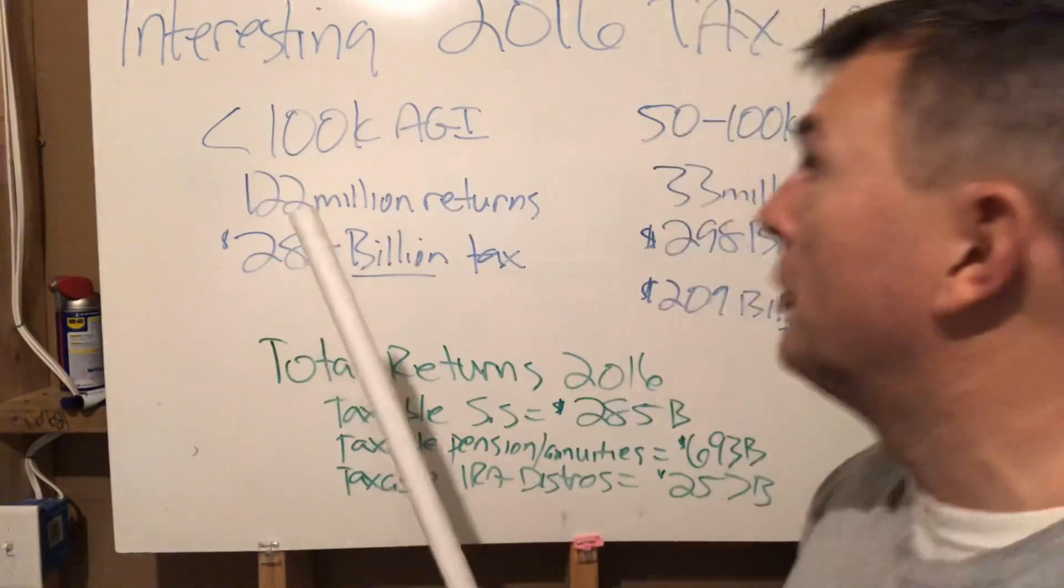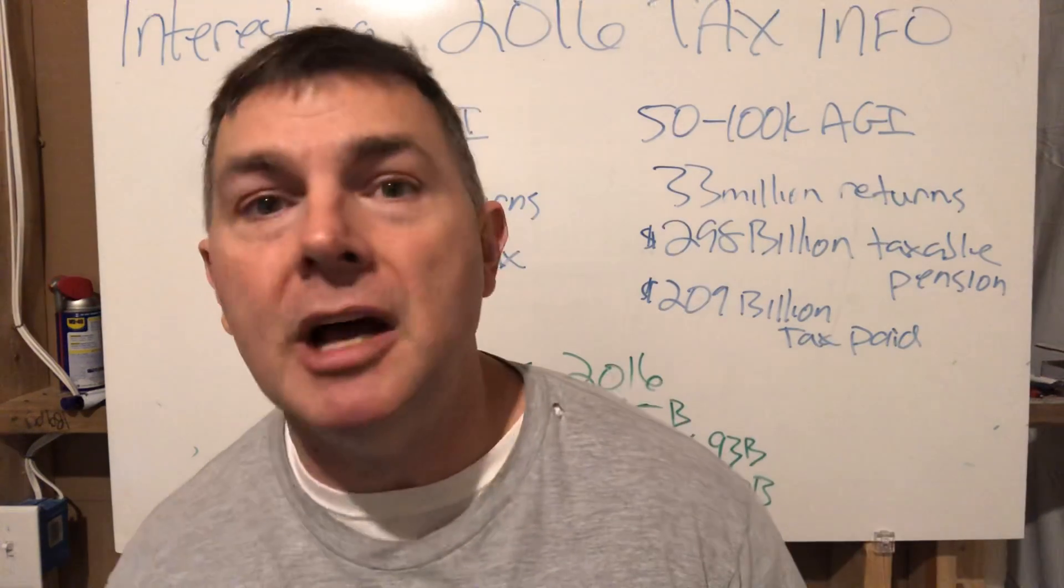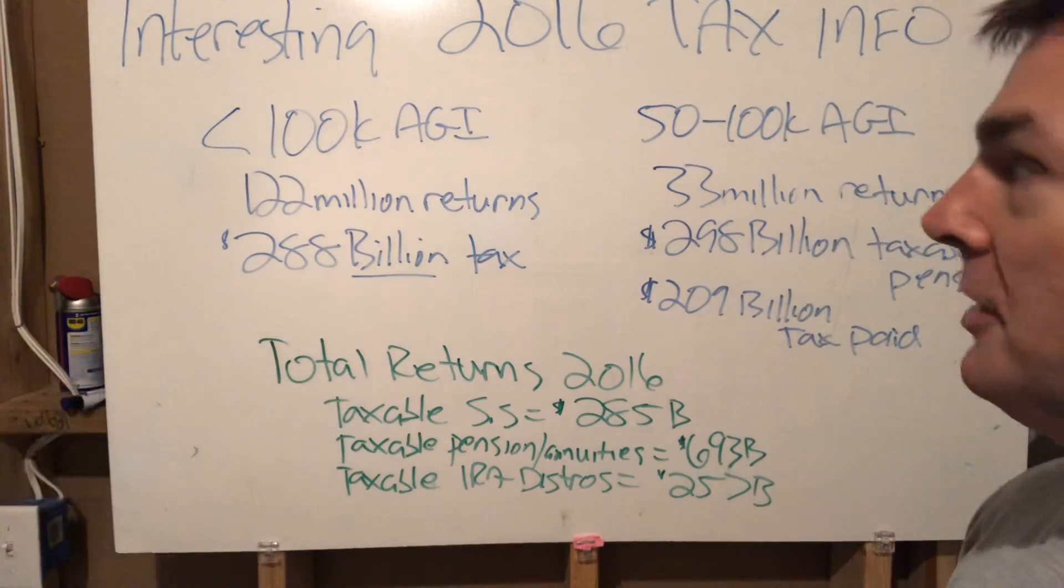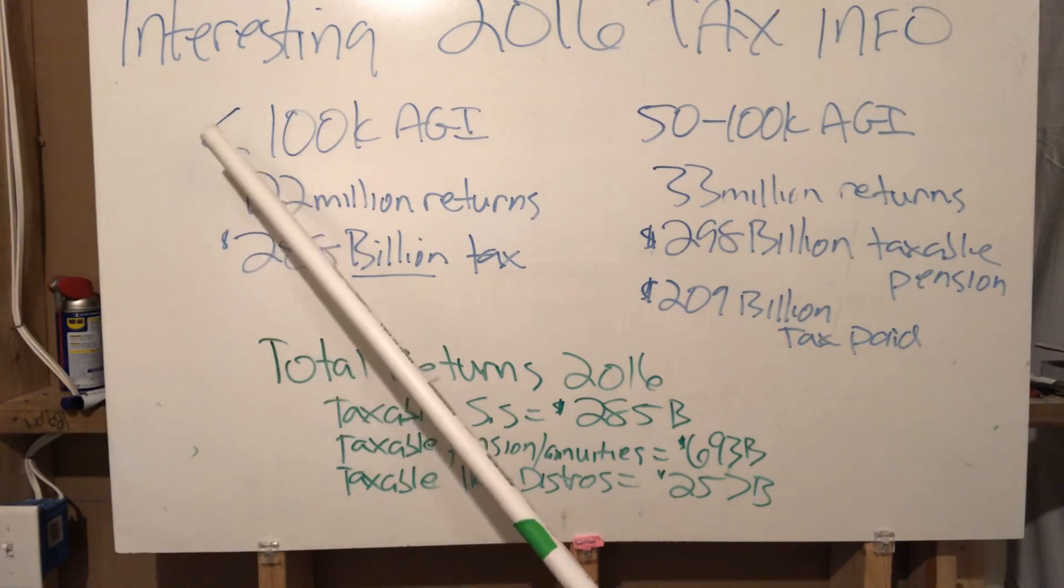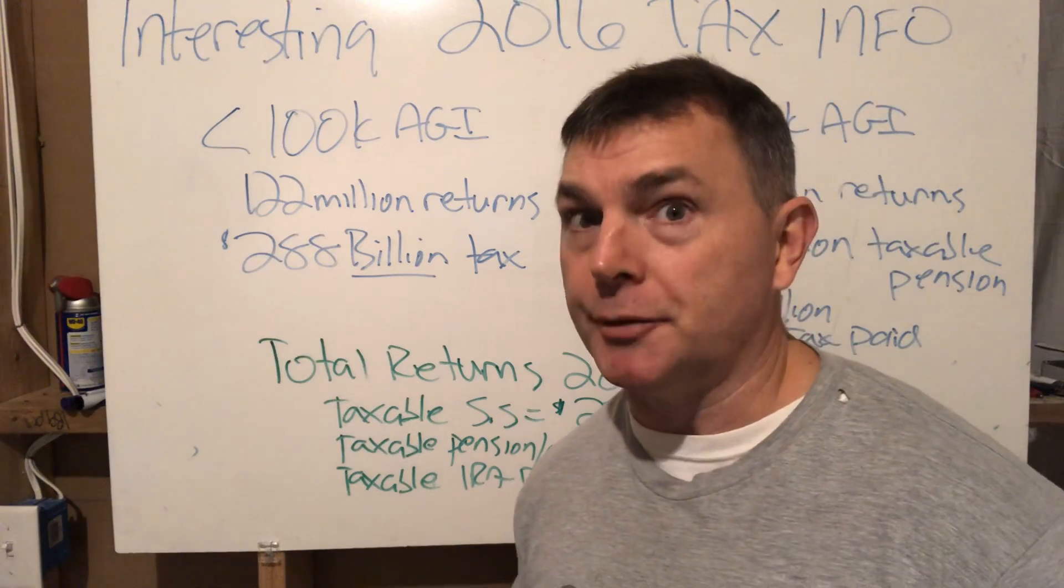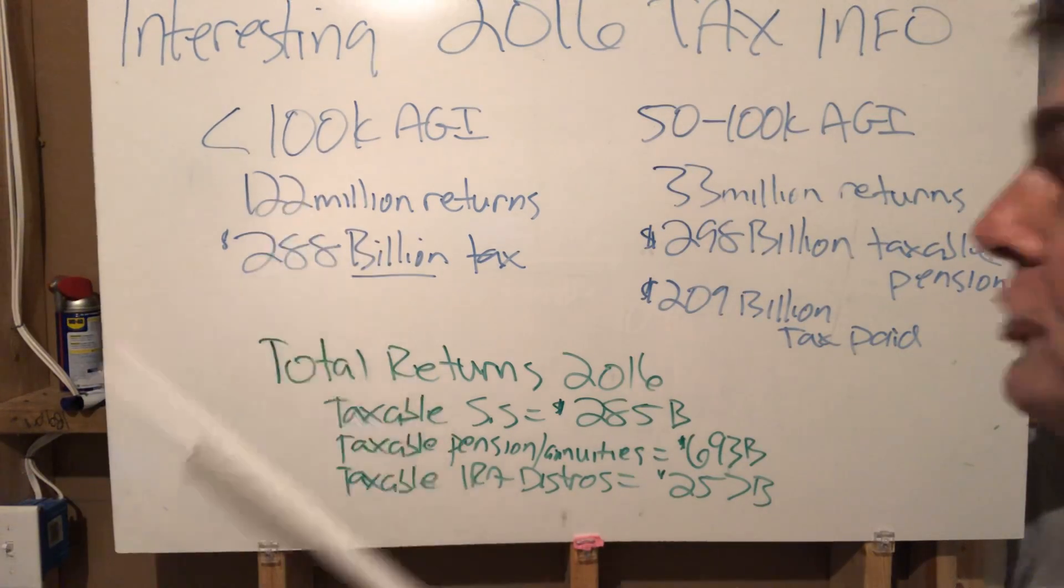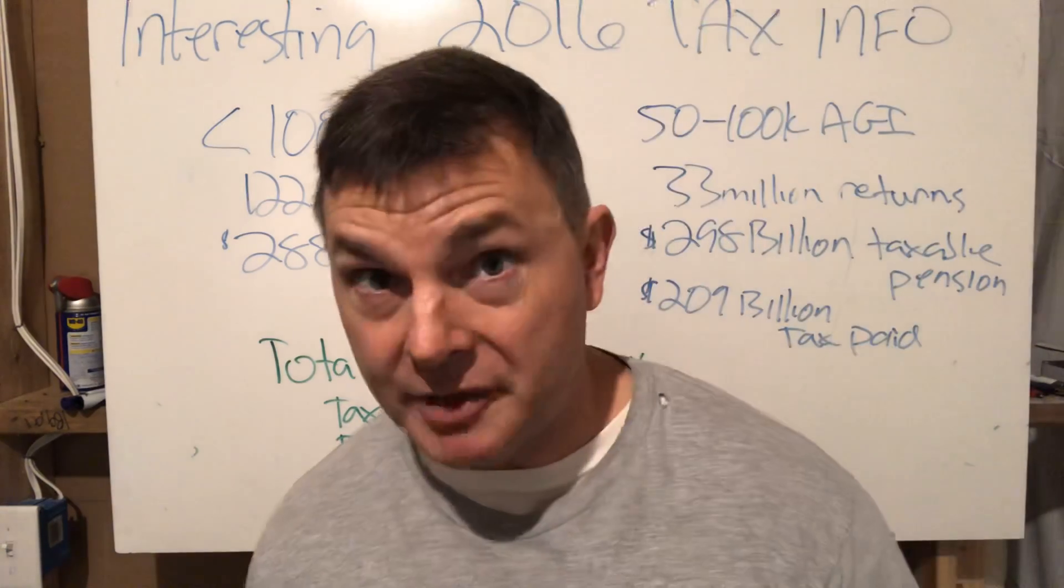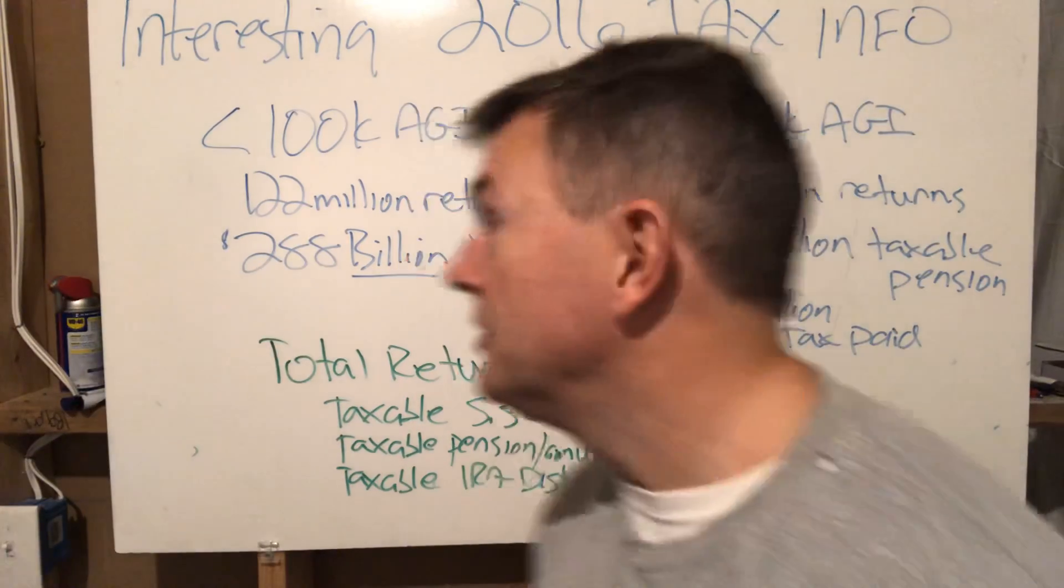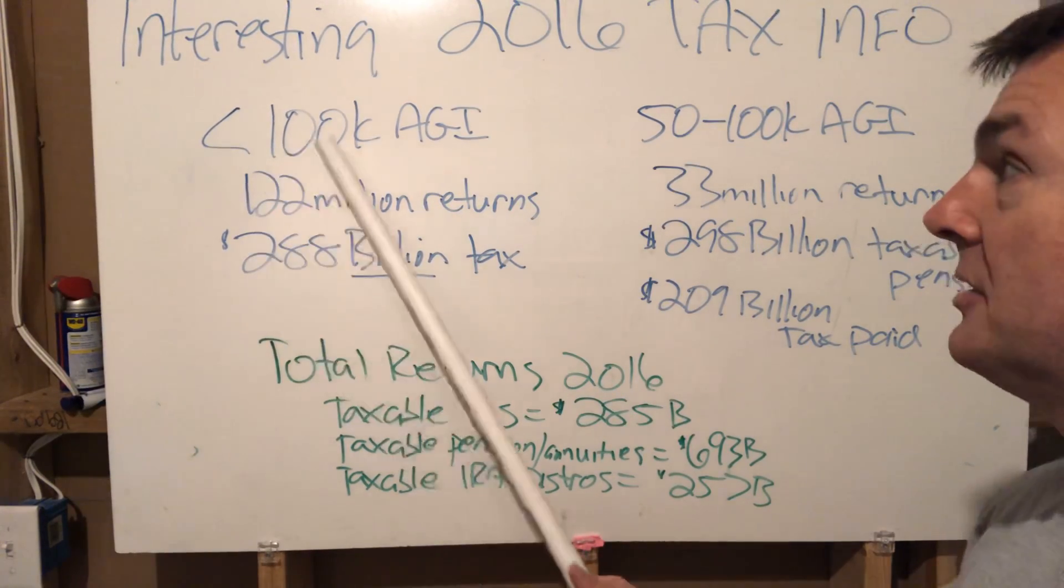Interesting 2016 tax info straight from the IRS. There's just tons and tons of spreadsheets on there. For people with less than a hundred thousand dollars of AGI, we had 122 million returns, of which those 122 million paid 288 billion dollars in total taxes.